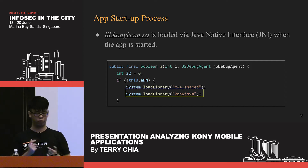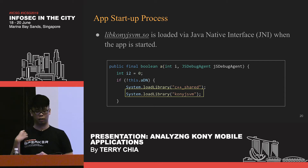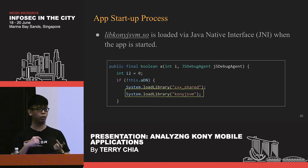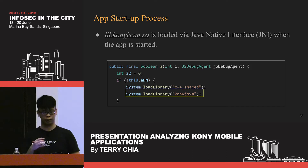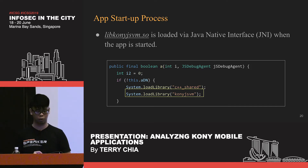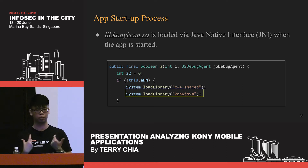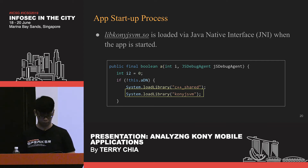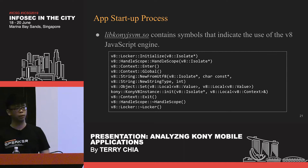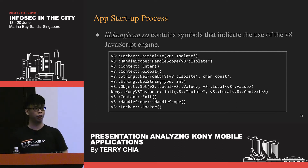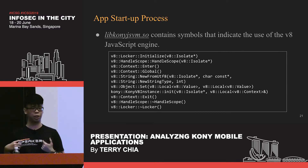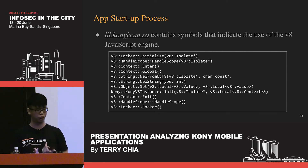When a Kony application starts up, it loads a shared library called KonyJSVM. If you decompile the Dalvik bytecode of the APK, you will see a method that calls System.loadLibrary to load the KonyJSVM shared library. There will be a different shared library for every CPU architecture the application supports. The shared library contains symbols indicating the use of the V8 JavaScript engine, which is statically compiled into the KonyJSVM library.